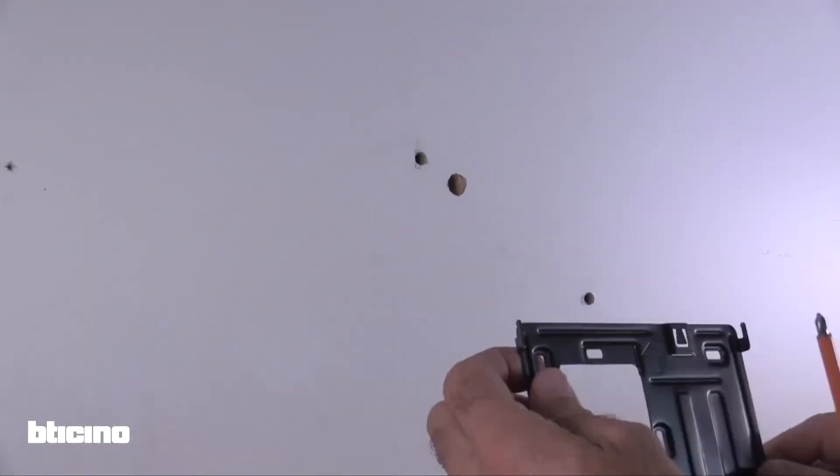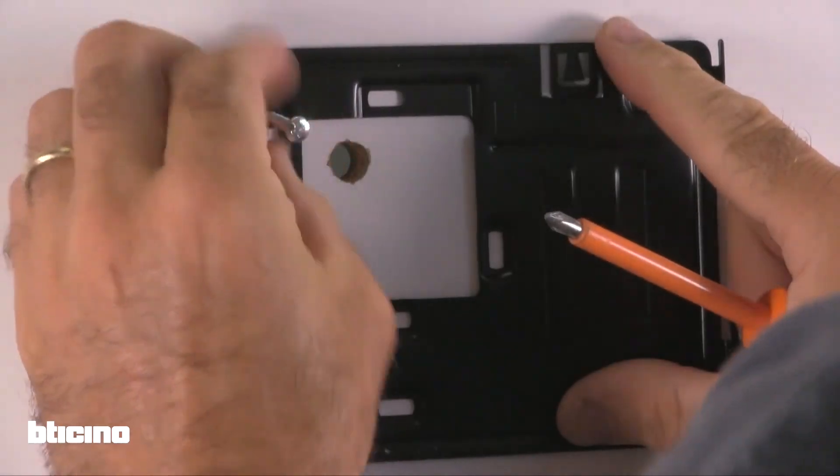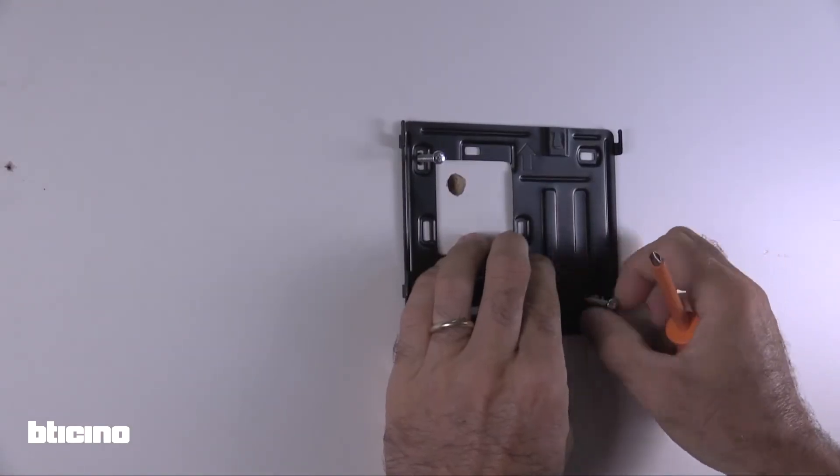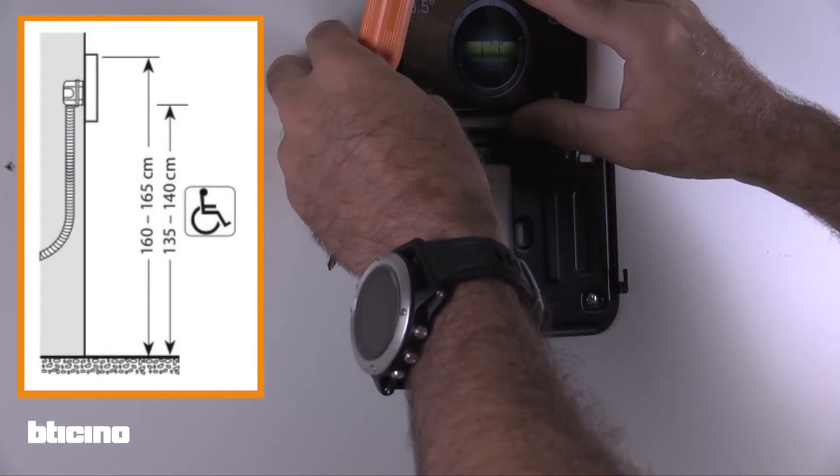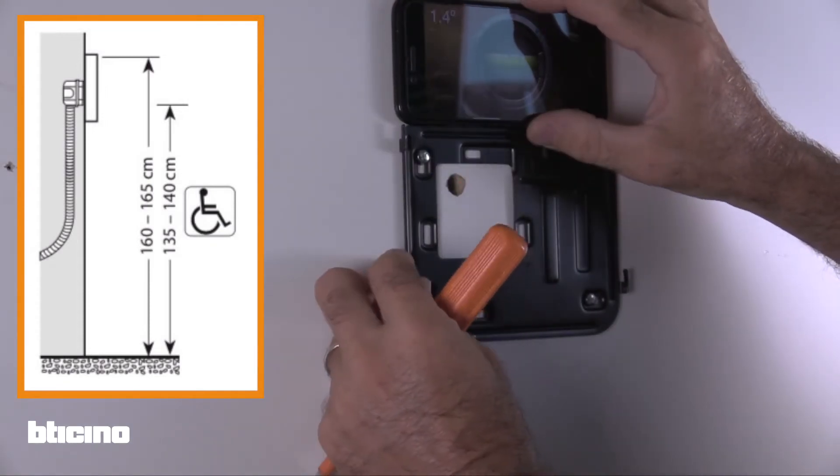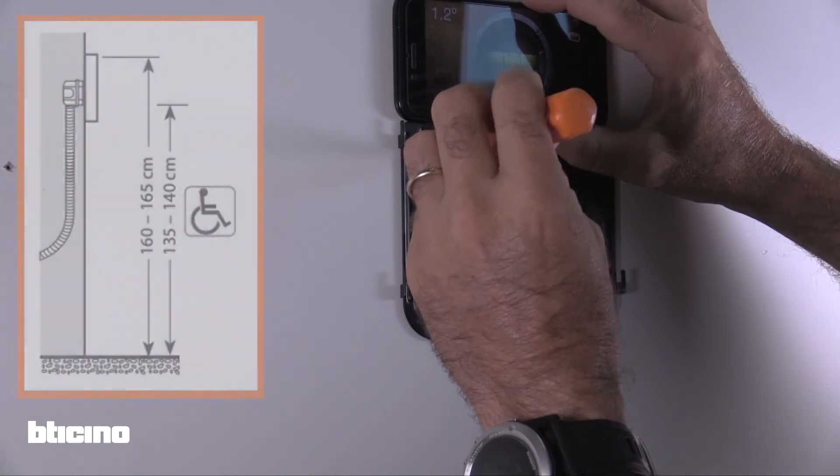Now, let's mount the internal unit. First, fix the metal bracket to the wall. Mount the unit approximately 160cm from the ground and using a spirit level, ensure that it's straight.